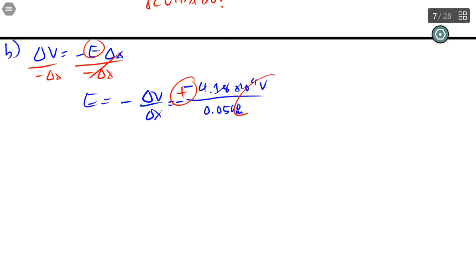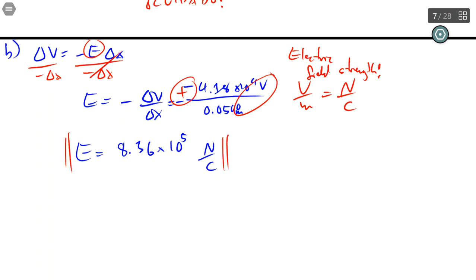And the units, volt per meter, is actually equivalent to Newton per coulomb, the units of electric field strength, which is what we're looking for. So I can put it in the units per coulomb. And sure enough, we get a positive number of a really strong electric field. And there we go.